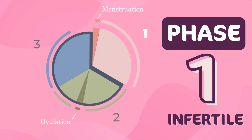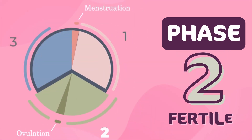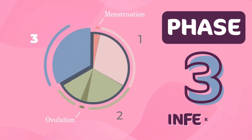Phase one of each cycle is an infertile phase that includes menstruation and a few days immediately following it. Phase two is the fertile time when new life can be conceived — it includes the days before ovulation, ovulation, and a few days after. Phase three is the second, longer infertile time beginning after ovulation and continuing until the end of the cycle.